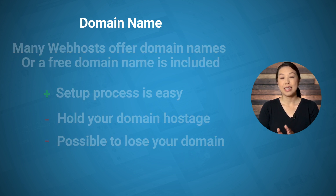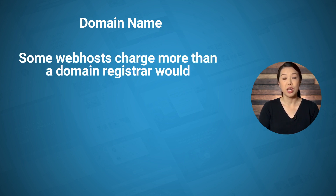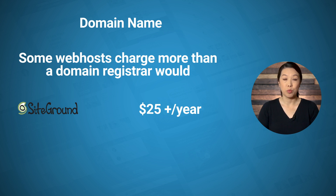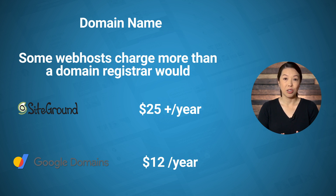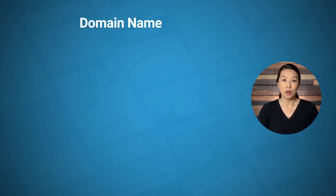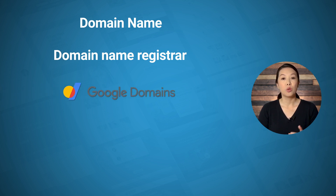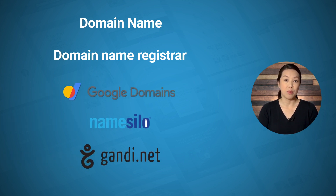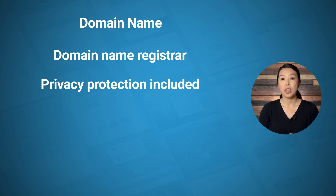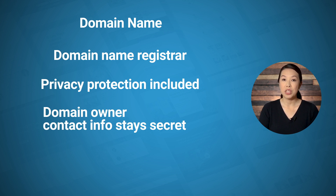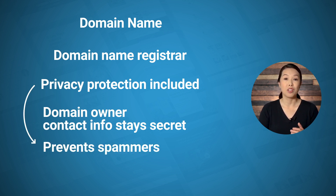Another thing to consider is that some web hosts charge more than a typical domain registrar. For example, you can purchase a domain name with SiteGround, but just for the domain name it's over $25 per year including privacy. Compare that with Google Domains, which is only $12 a year including privacy — it just seems rather pricey. If you choose to purchase a domain name separate from your web host, you'll need to think about a domain registrar. You can look at Google Domains, Name Silo, or Gandi, to name a few. I highly suggest purchasing from a company where privacy protection is included in the price, which I believe is the case for all of these recommendations. Privacy protection prevents the domain owner's name and contact information from being public, and so it prevents spammers from contacting you.